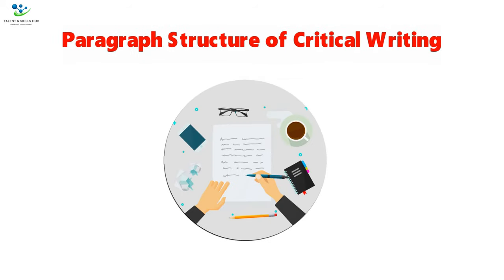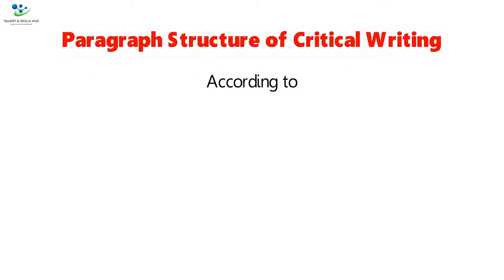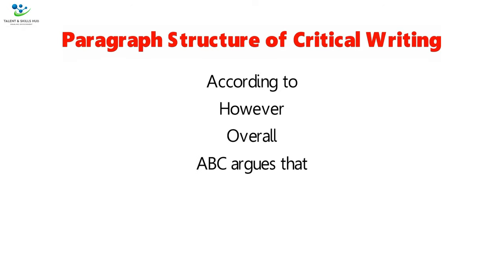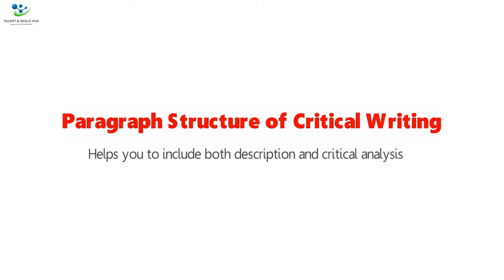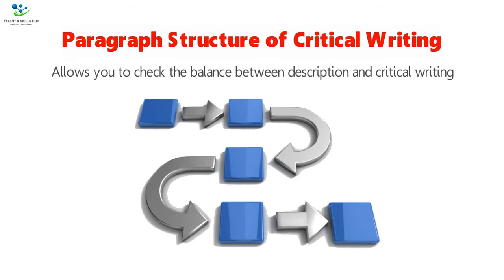Paragraph structure of critical writing. It is good academic practice to follow a three-sentence structure where you provide description, analysis, and evaluation — that is, a descriptive statement plus a critical statement plus a judgment statement. Examples of language to use: 'according to,' 'however,' 'overall,' 'ABC argues that,' 'alternatively,' 'therefore.' This structure helps you include both description and critical analysis, shows visually where sections begin and end, allows you to check the balance between description and critical writing, and ensures you have enough critical content.